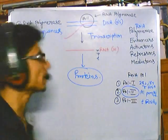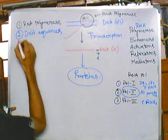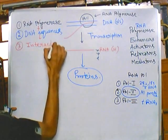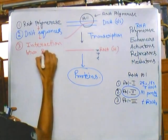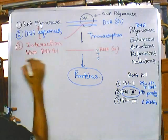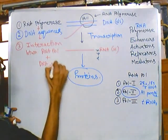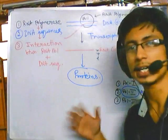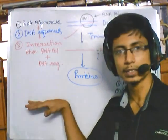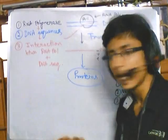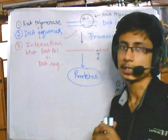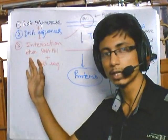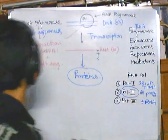Not only these two things individually, but the interaction between RNA polymerase and DNA sequence is very important for the transcription of eukaryotic mRNA, tRNA, and rRNA. The polymerase binds to the DNA sequence, and along with that there are also mediators involved.